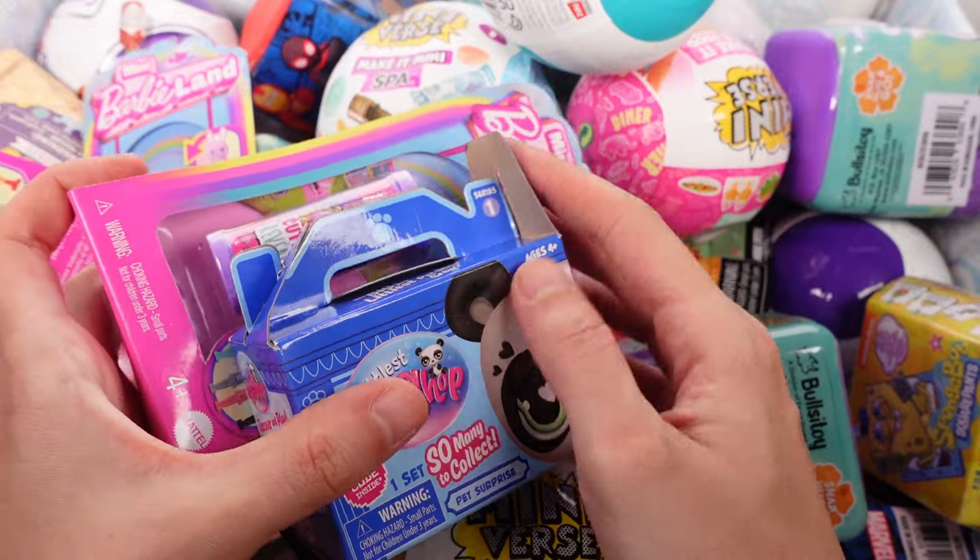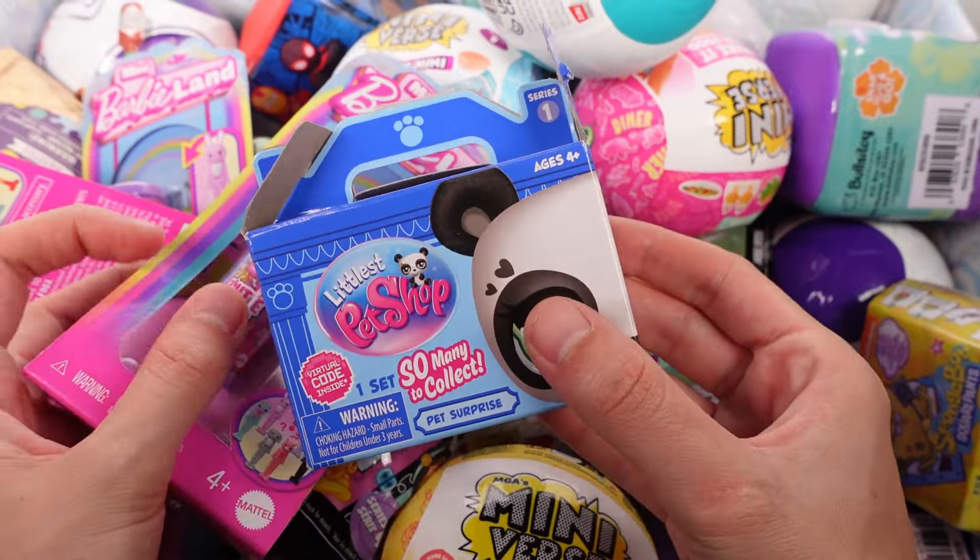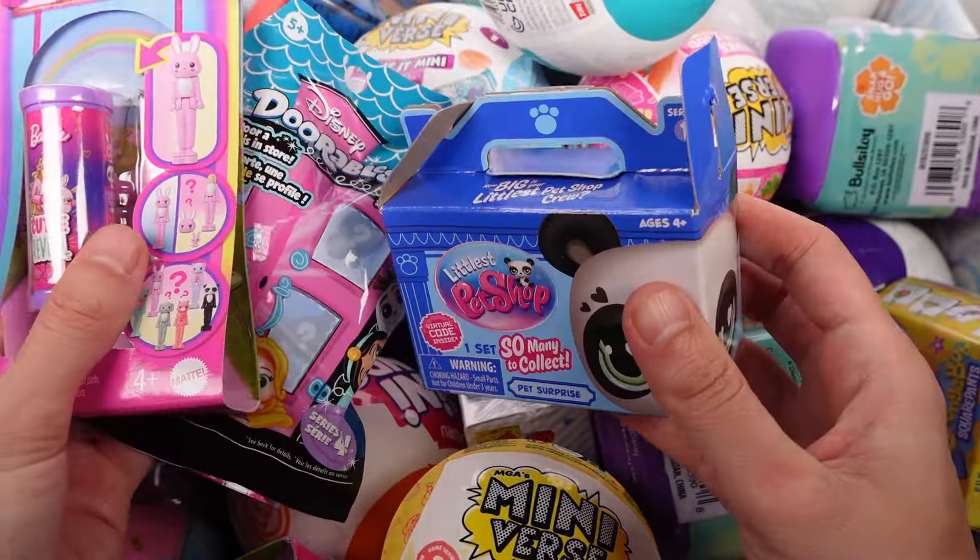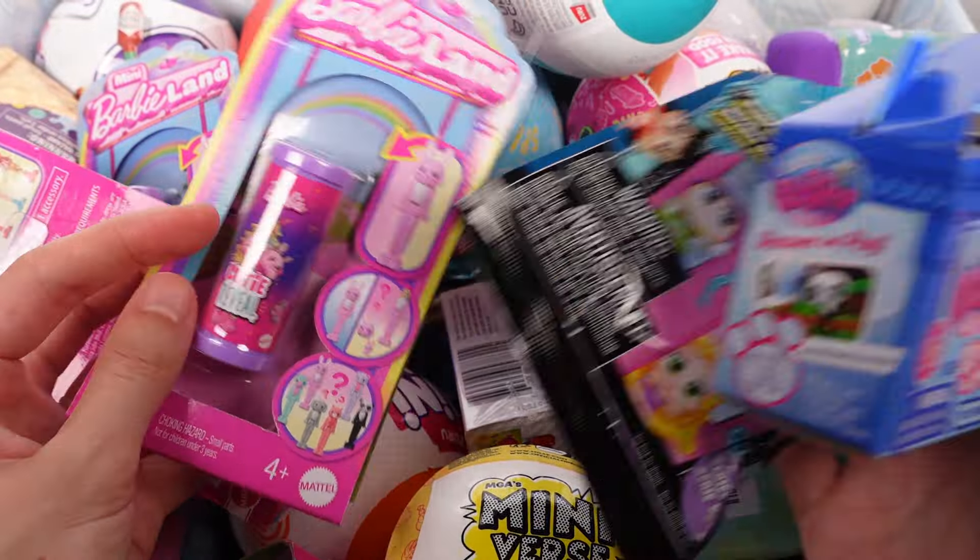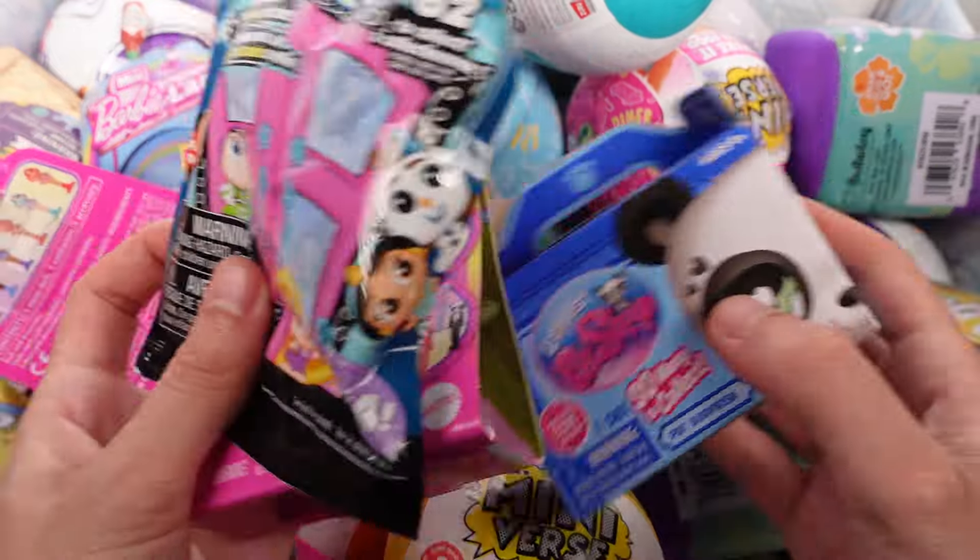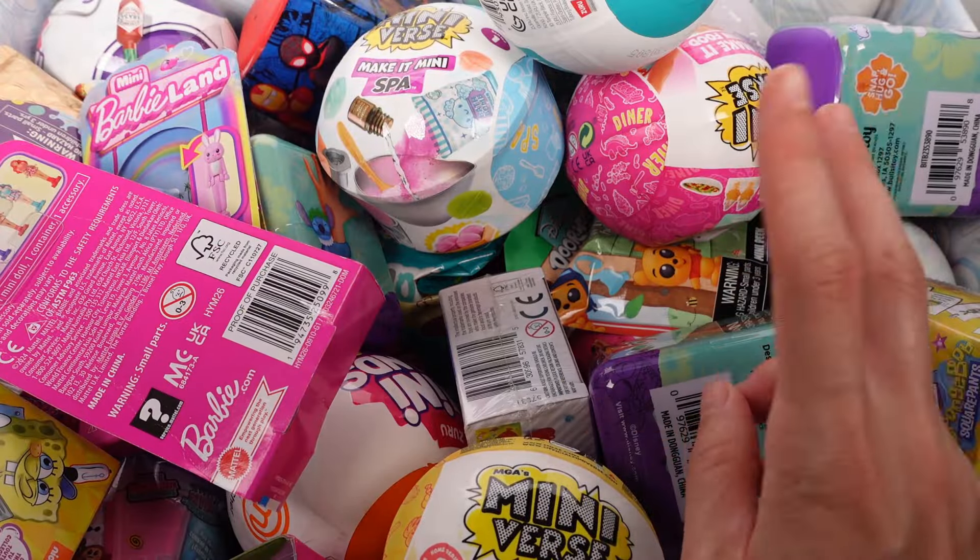We've got a few cool items. This one's already coming open but we've got the Littlest Pet Shop series one and the mini Barbie Land Cutie Reveal as well as a Disney Adorable series four.